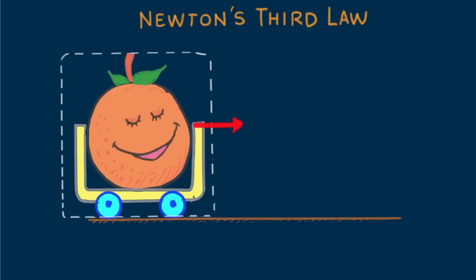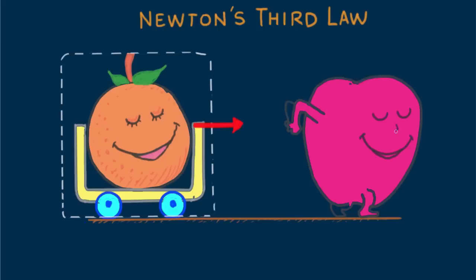Here we see that the force is provided by Mr. Apple, who is outside the system. In Third Law fashion, we note that the apple can't pull on the orange without the orange pulling on the apple.